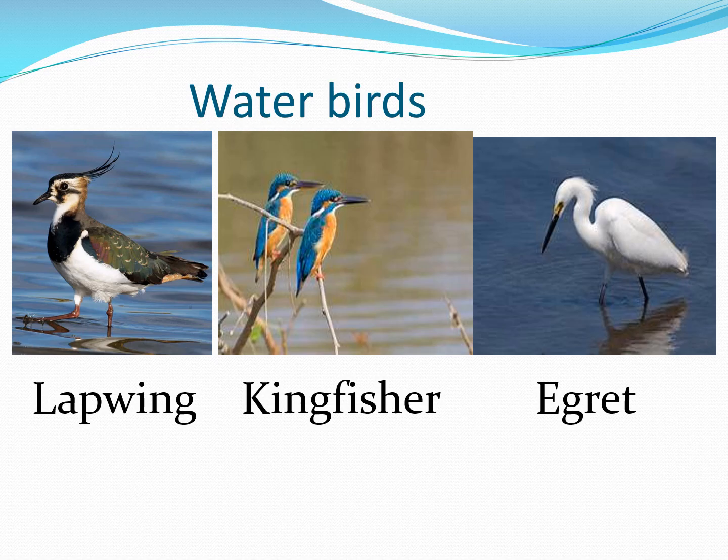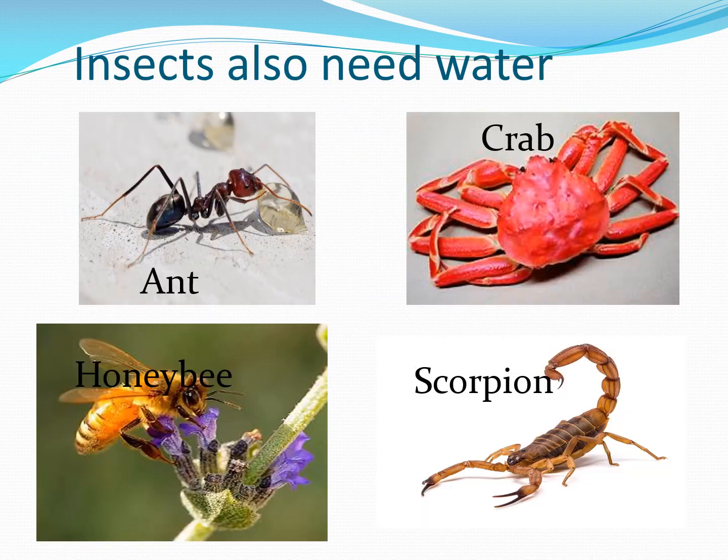The water in the public source has to be kept clean. People who keep animals provide drinking water to them without fail. Ants, honeybees, crabs, scorpions and all other animals need water. Why do we go near a water hole in a jungle to see wild animals? Wild animals also need water. They come to a water hole in the forest when they are thirsty, so people go there in order to sight wild animals.